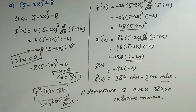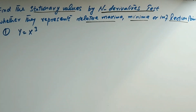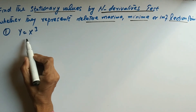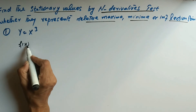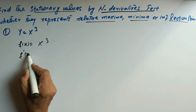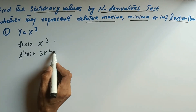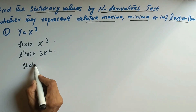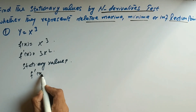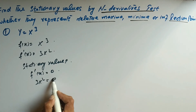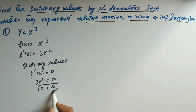Now for another question: f(x) = x³. We take the first derivative: f'(x) = 3x². For stationary values, f'(x) = 0 gives 3x² = 0, so x = 0.